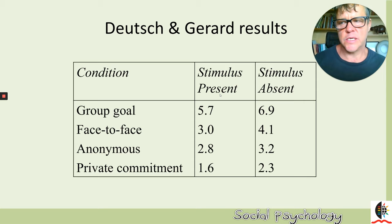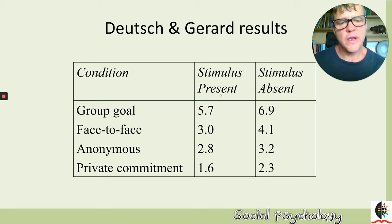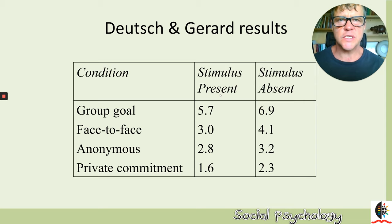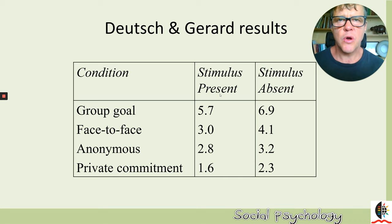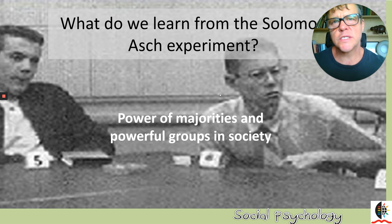Those conditions provide support for the idea that normative influences operate in this experimental situation. But looking at the stimulus-present versus stimulus-absent columns, there are higher levels of error when the stimulus is absent. Deutsch and Gerard argued this showed the effect of informational influence — when the stimulus is absent, your answer is less rooted in what you can see and much more affected by the ideas of your peers. The study overall was a great success in demonstrating that both informational and normative influences proposed by Asch were indeed present.